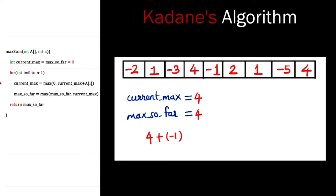Now we go to the next item, minus 1. If we add it, we get the sum as 3, so we set current max to 3. We don't change max so far because it is already greater than current max. Moving on to the next item, 2 — adding it to current max gives 5, so we set current max to 5. Since max so far is less than current max, we set max so far to 5. Next element is 1: 5 plus 1 is 6, so we set current max to 6 and max so far becomes 6 as well.